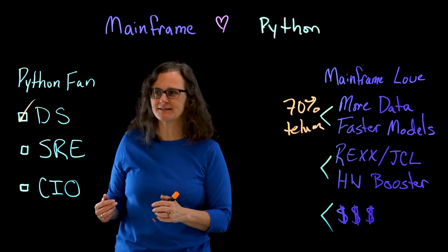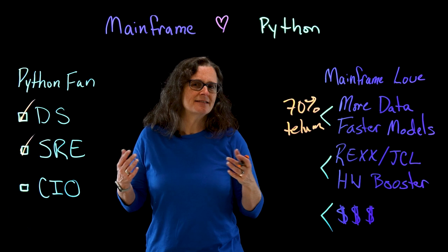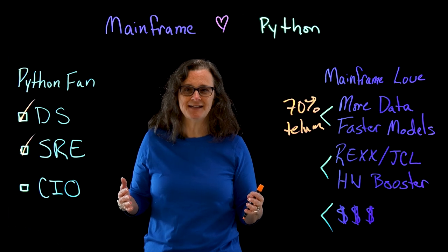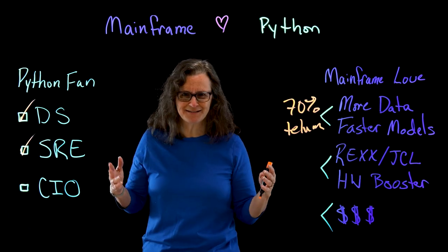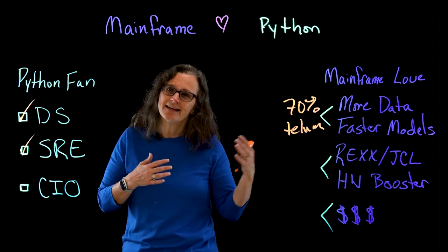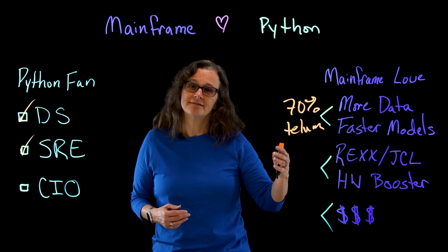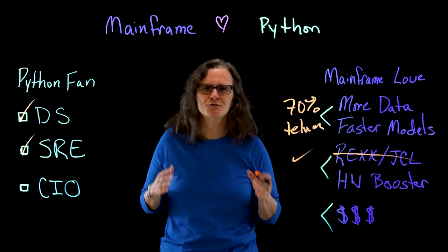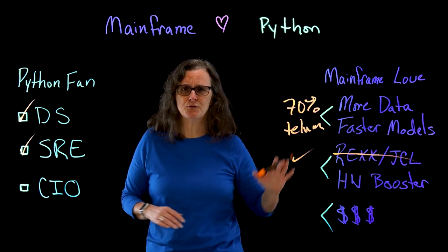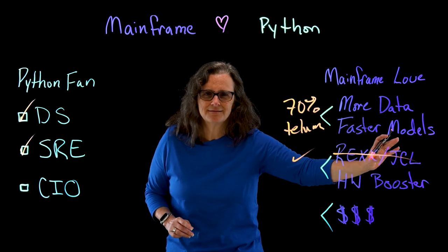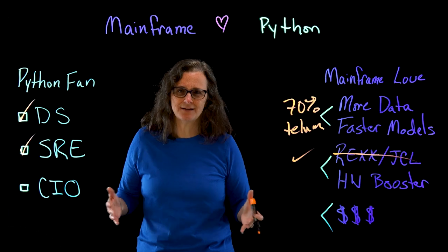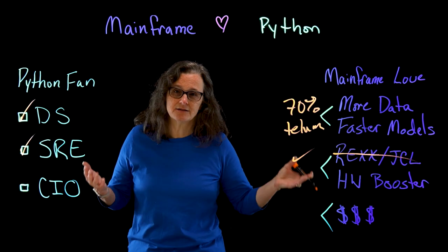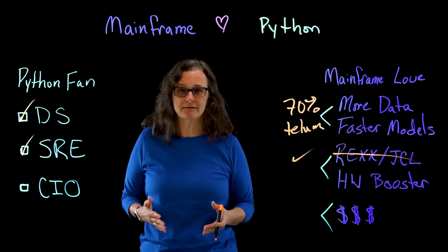Now let's turn to the next person: the SRE. When I think about SREs, you're using Python today. You're doing infrastructure as code with Python. It's the most common language when dealing with SRE environments so that I can manage systems effectively. Well, on the mainframe, you may think about REXX and JCL, but forget about that. You can use Python to do all of what you need to do on ZOS. You can ignore those languages and just build new things using Python. And if you have to, you can call existing REXX and JCL, or you can do it all in Python.